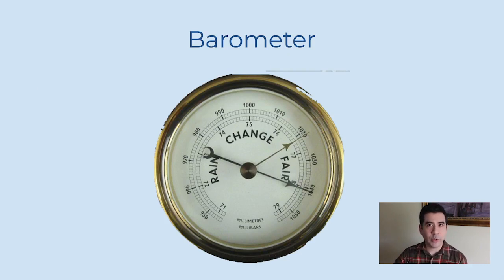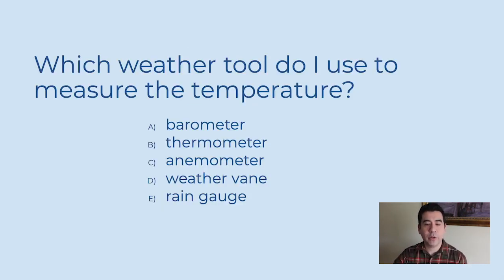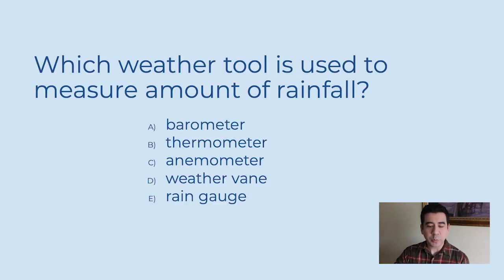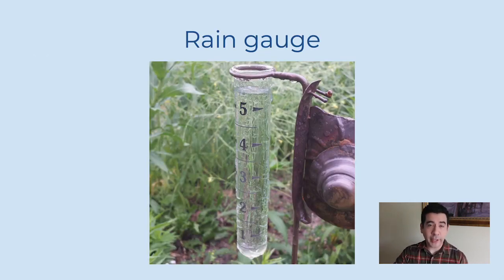Alright, you're on a roll. Second question: which weather tool do I use to measure the temperature? Right, a thermometer — good job. Ready for question three? Which weather tool is used to measure the amount of rainfall? A rain gauge measures the rainfall. Good job, guys!